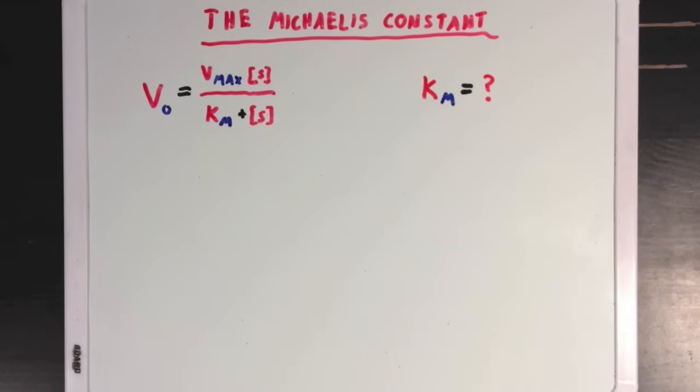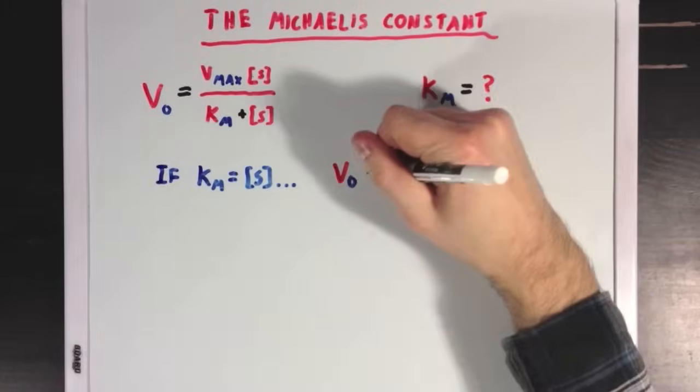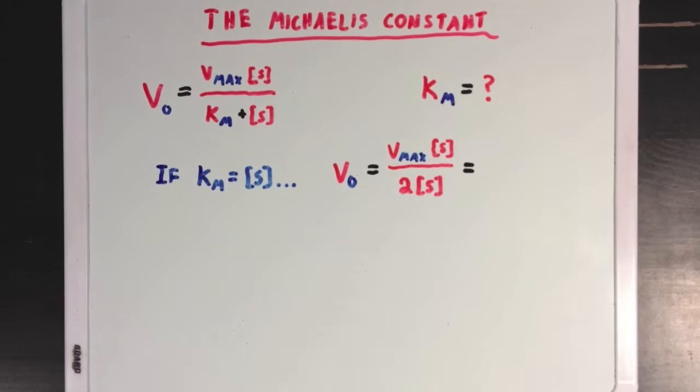Now, if you bear with me for a moment, and pretend that KM is equal to our substrate concentration, then we can sub in that value into our Michaelis-Menten equation, which would put 2S on the bottom, the sum of S plus S, and then the S will cancel out, and we'll be left with Vmax over 2.